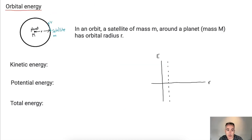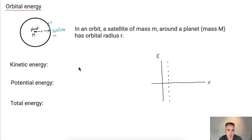In terms of orbital energy, let's consider a situation where we have a planet that's got a satellite in orbit around it. The planet has a mass capital M, the satellite has a mass lowercase m, and it's got an orbital radius R, so it's going around in a circle. We're going to look at kinetic, potential, and total energy in this orbit. Keep in mind this is going to be the radius of the planet, so we're not going to consider anything inside that.